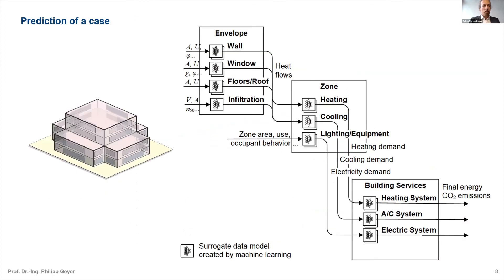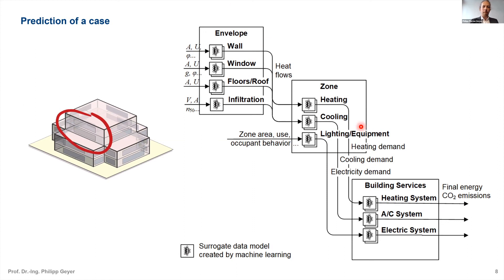For prediction, we compose the model from the previously generated component data models. To represent the energy performance of a facade piece, we take the wall and window components, plug them together with the respective parameters, and get the required heat flows. We do that through the whole hierarchy down to whatever we want to predict — final energy, CO2 emissions, or whatever — and quickly get results.